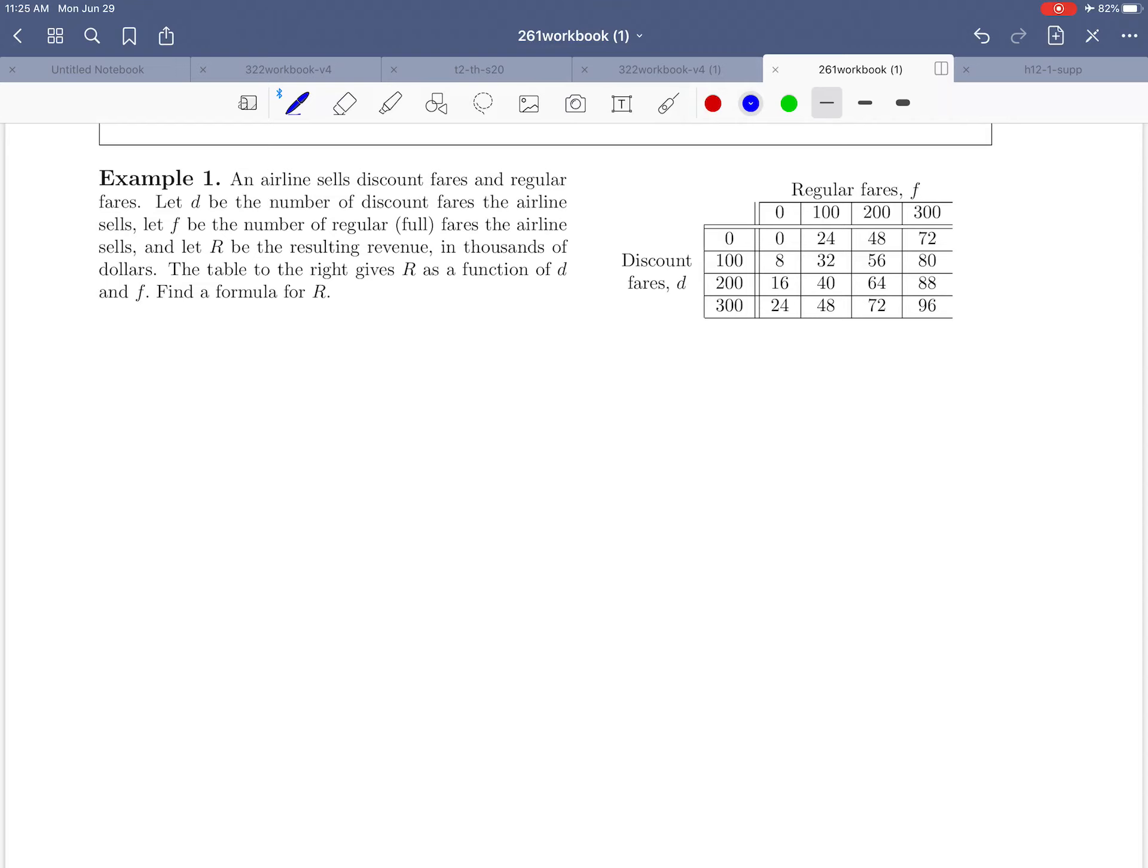Hello everybody and welcome to example 1 on page 11 in the workbook. This is the first example of a situation where they're asking us to find a formula for a linear function. We're going to let D represent the number of discount fares and F will represent the number of full regular fares, and we'll let capital R be the revenue.